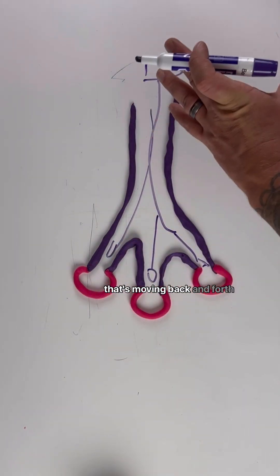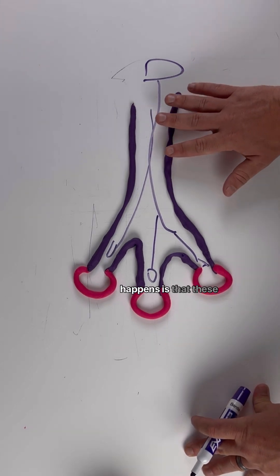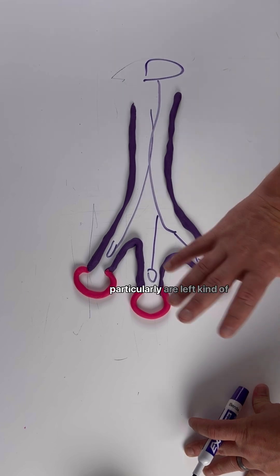We have good ventilation moving back and forth, but what happens with patients that have COPD, asthma, or something along those lines? With the pathology, the alveoli are left unaffected, but these bronchioles start to narrow.